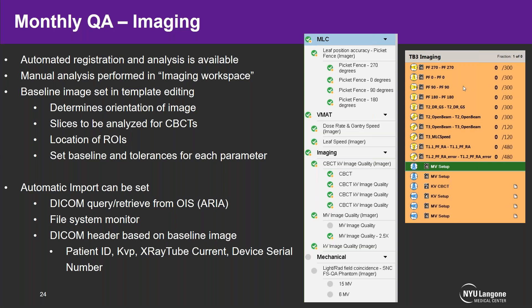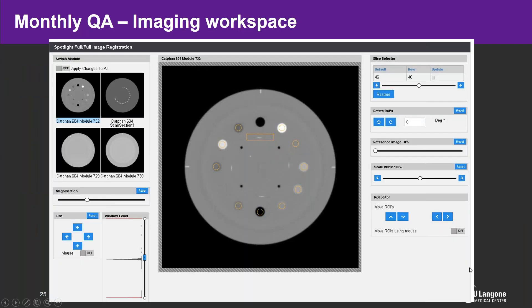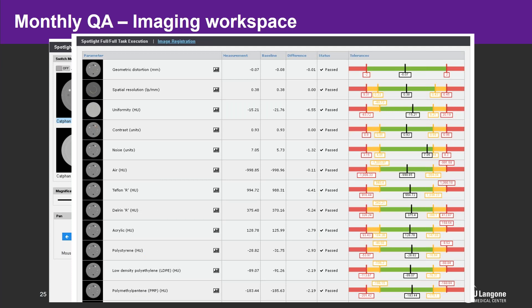Auto-match in SNC Machine is done based on DICOM header information for the baseline image, using the patient ID, image energy, image current, and device serial number. You can see our task list in SNC Machine covering all imaging sets including MLCs, picket fence tests, VMAT tests, and imaging tests. This is a look at the QA plan we load on the TrueBeams to run through everything.